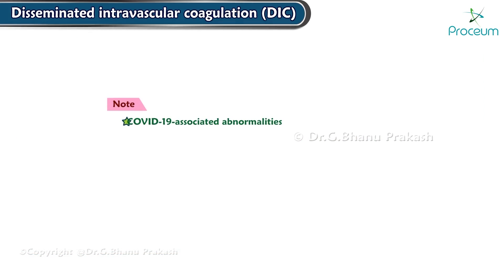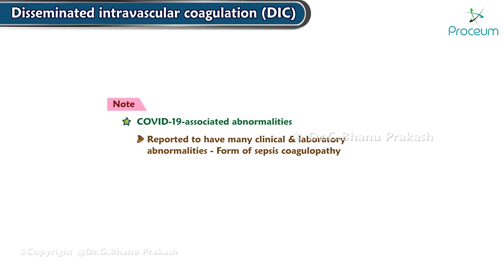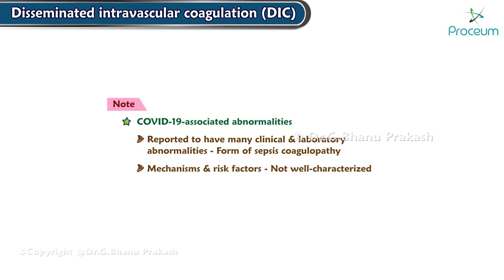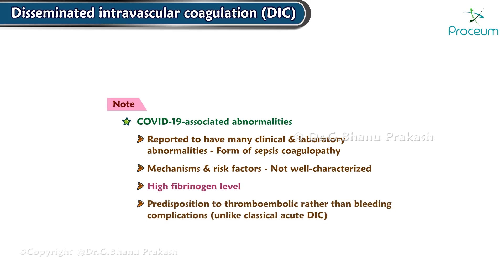COVID-associated abnormalities. Patients with COVID-19 are reported to have many clinical and lab abnormalities suggesting a form of sepsis coagulopathy. The mechanisms and risk factors for these changes are not well characterized. COVID-19 patients appear to have a high fibrinogen level and predisposition to thromboembolic phenomena rather than bleeding complications, unlike classical acute DIC.